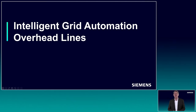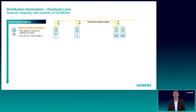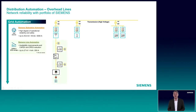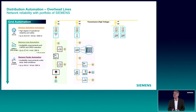Let's start with the first topology of distribution grid: the intelligent grid automation for overhead lines. Here you see a classical layout of a distribution network on overhead lines. On the left-hand side, you see the basic automation or even low automation for monitoring and local operation. On the second pillar, you see the feeder automation, where you have remote control abilities from a SCADA system, but no clever functionality included.